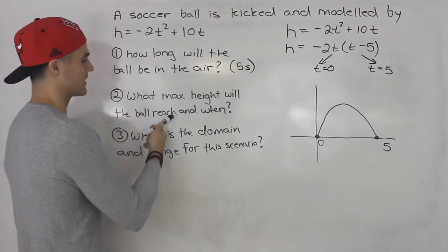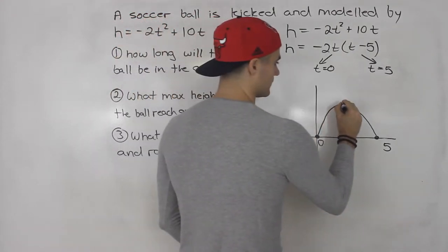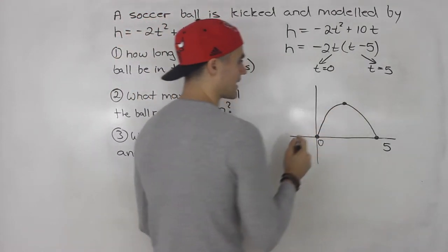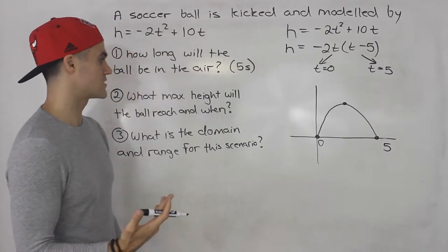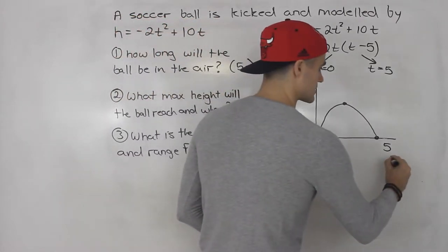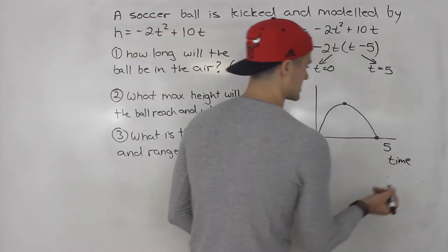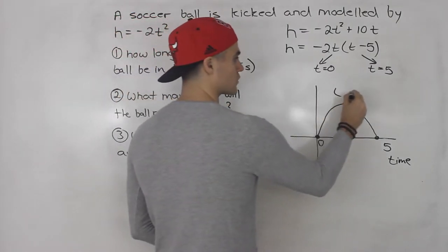Number two, what max height will the ball reach and when? The max height is going to be here. So basically, what they're asking for when they're asking for the max height is the y value of the vertex. And then when they ask when, because this axis is time, they're asking for that independent variable, the t value for the vertex.